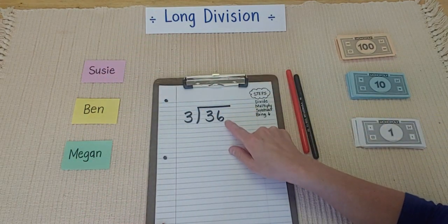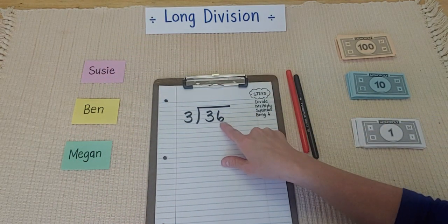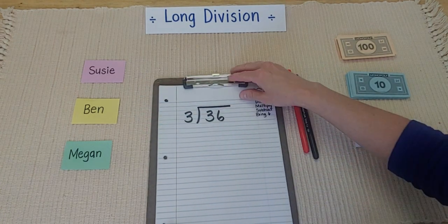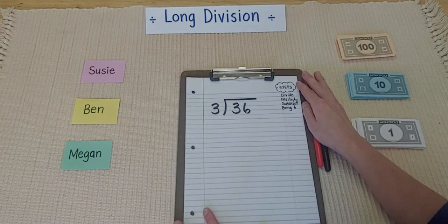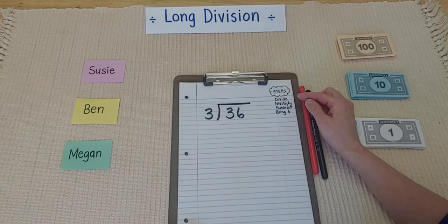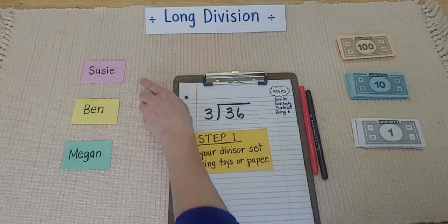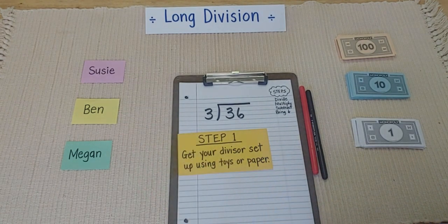And I have $36, and it's my job to split this money so that everyone gets their fair share. So, this is how we're going to do this. First, step number 1 is get your divisor ready. And we did that. I have my 3 people that I'm sharing with.